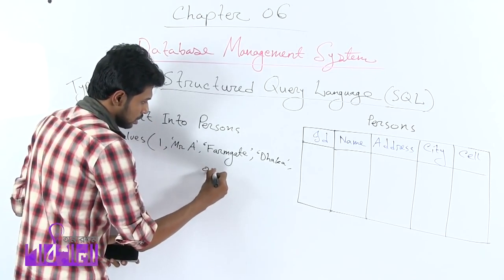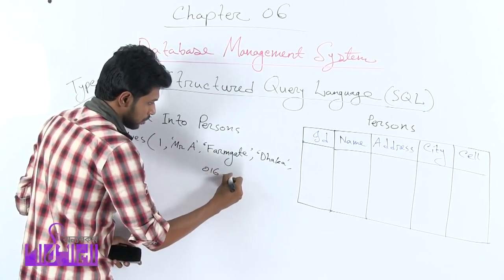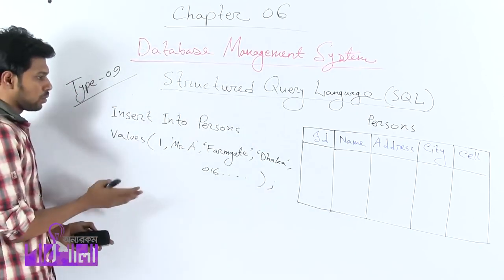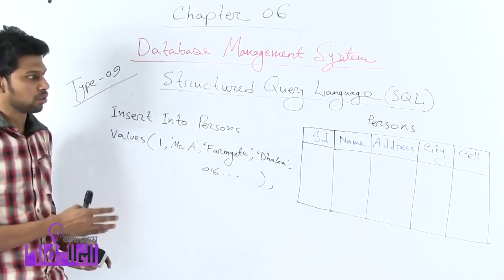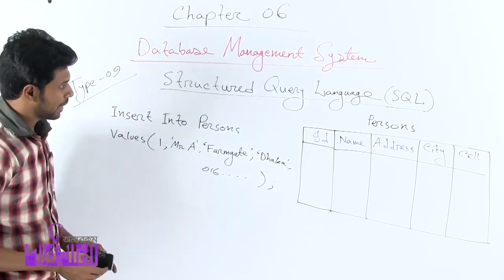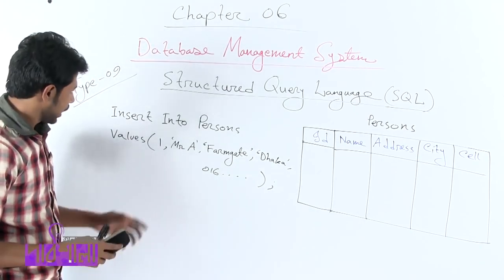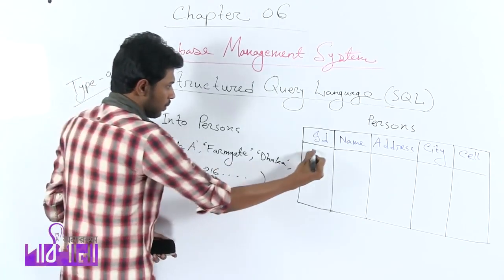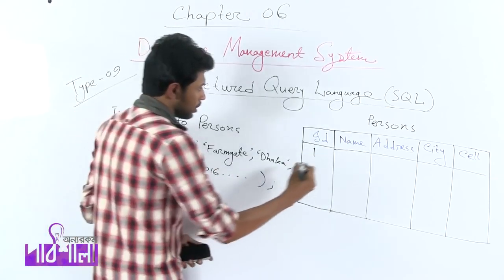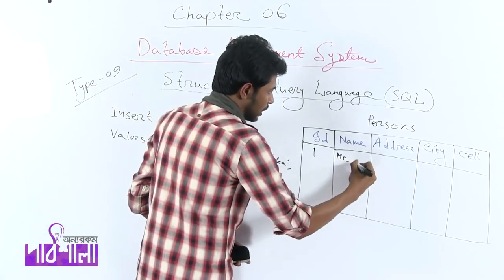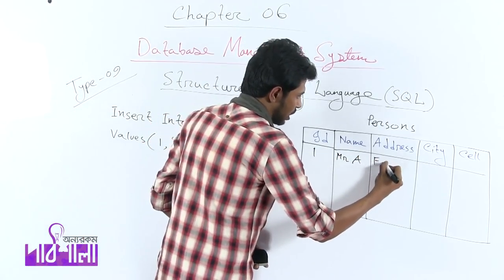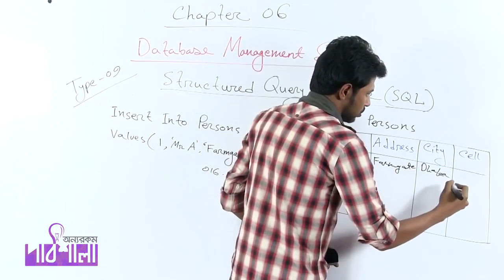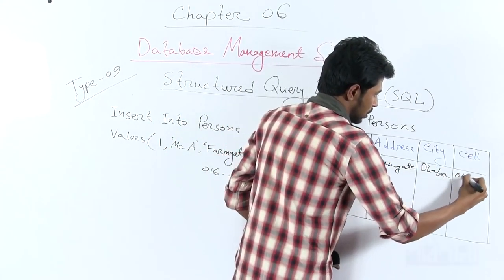0, 1, 6 — so the cell number is complete. To the file: if you run this code, the data will be inserted into the persons table. Here ID is 1, then name is Mr. A, address is Farmgate, city is Dhaka, and cell number is 016...